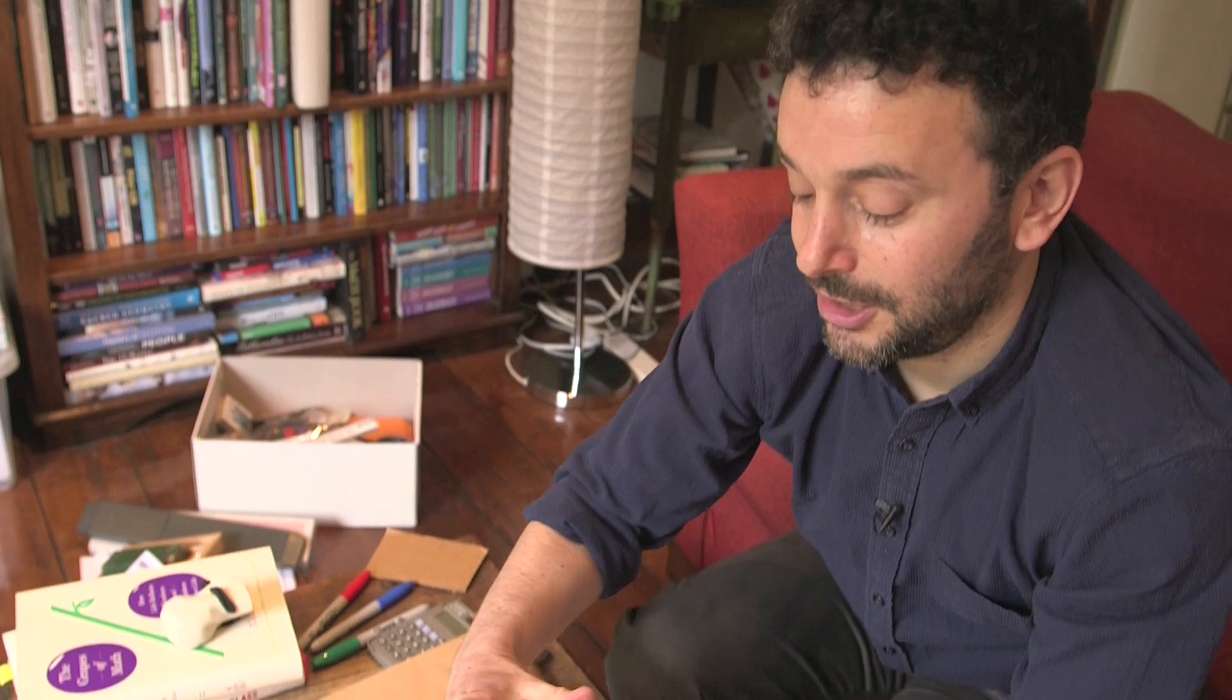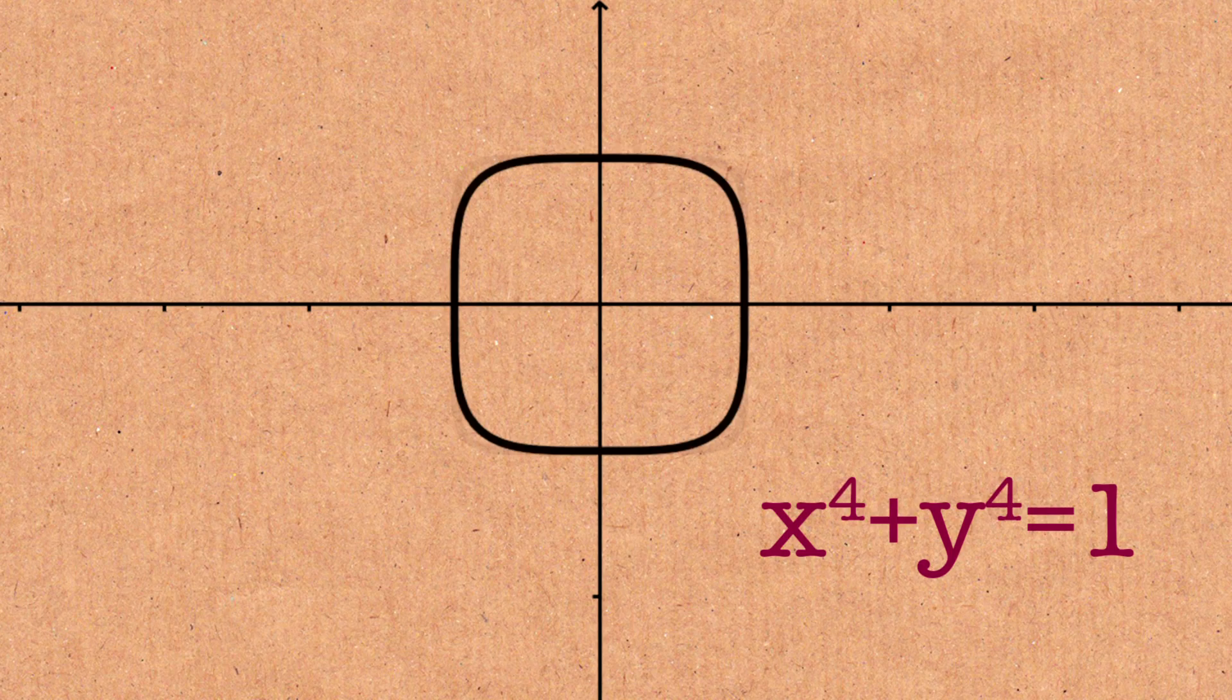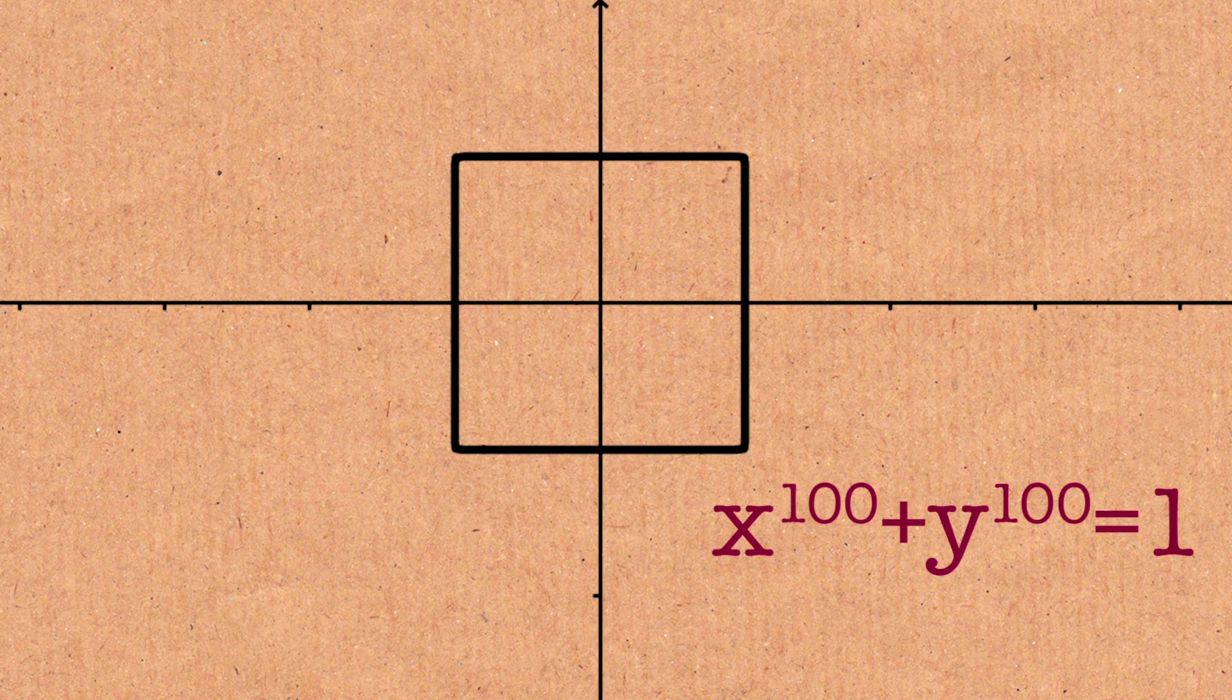So by playing around with the exponent, it sort of puffs out and approaches in the limit, the square. Squaring the circle. Exactly. You could call it a squircle.